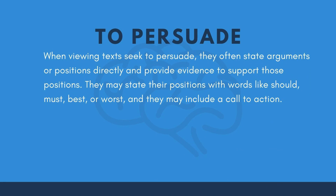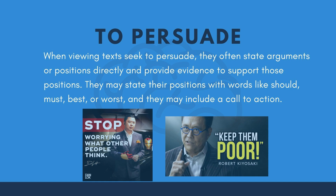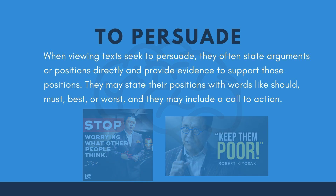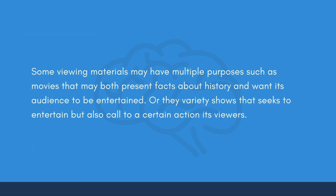When viewing texts seek to persuade, they often state arguments or positions directly and provide evidence to support those positions. They may use words like should, must, best, or worst, and may include a call to action. Video programs of well-known entrepreneurs are the best examples because they want you to do something and provide reasons for you to believe them. Some viewing materials may have multiple purposes, such as movies that present historical facts while entertaining, or variety shows that entertain but also call viewers to a certain action.